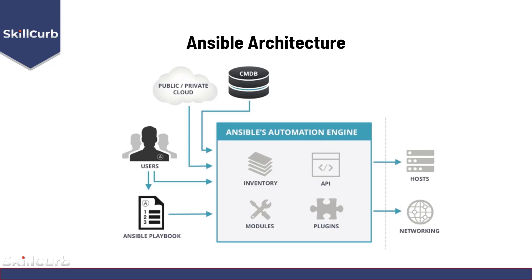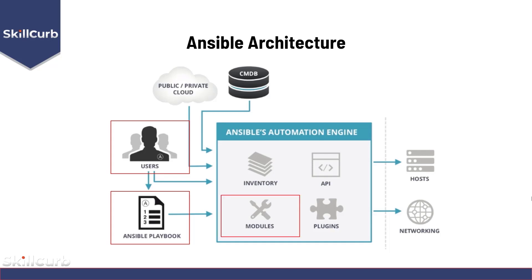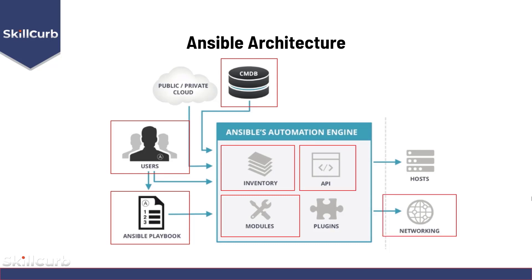Now let's look at how all these parts work together. Users create Ansible playbooks and feed them into the Ansible engine. If the user wants to reuse a playbook in the future, it's saved as a module inside the engine. The Ansible engine then checks the CMDB to verify the user's permissions and relationship to the target node. When it's time to execute, the engine looks up the target node's IP in the inventory, and with the help of the API, sends the playbook over the networking infrastructure to the target node to be executed.